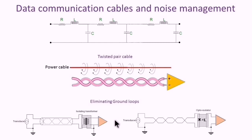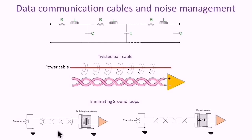A ground loop is one of the causes of noise and interference in a data transmission system. This happens when there is a difference in potential between the ground points. One of the ways to eliminate this is to use galvanic isolation for the signals.